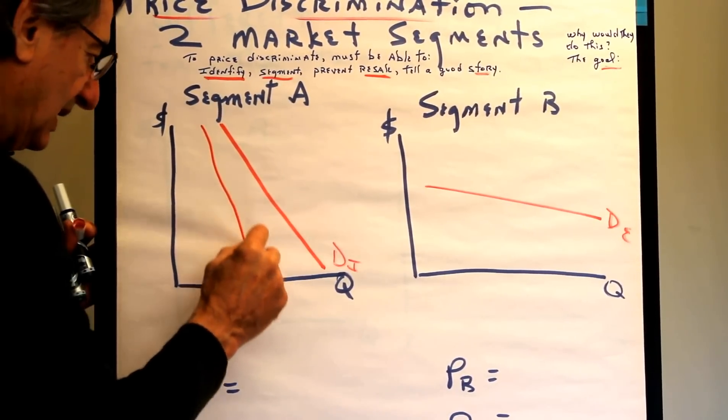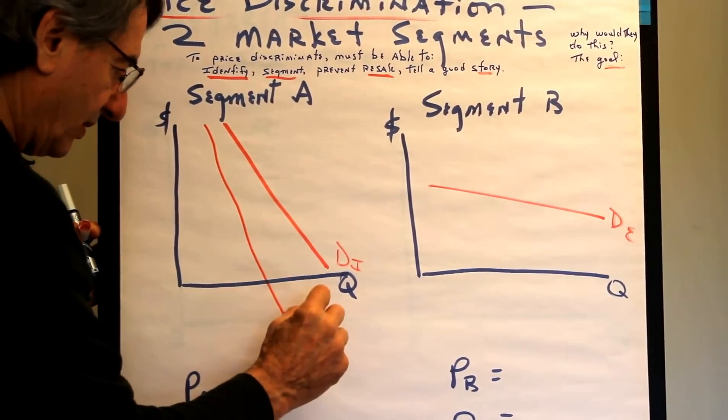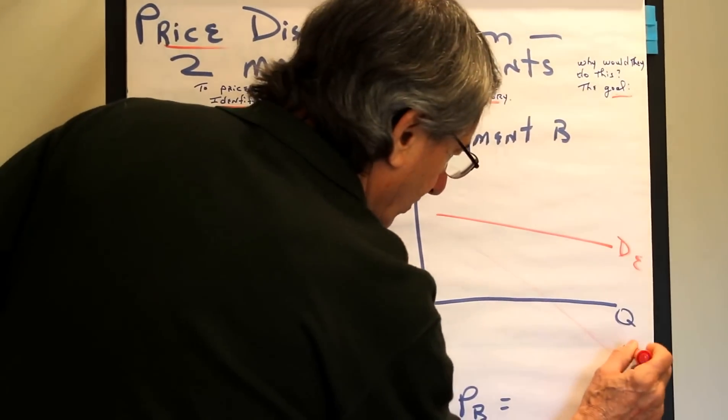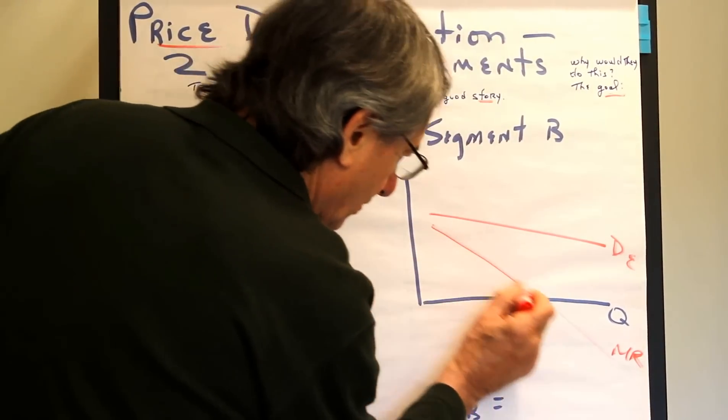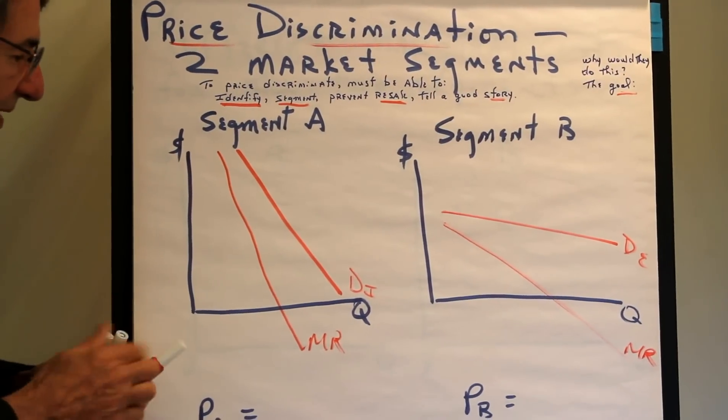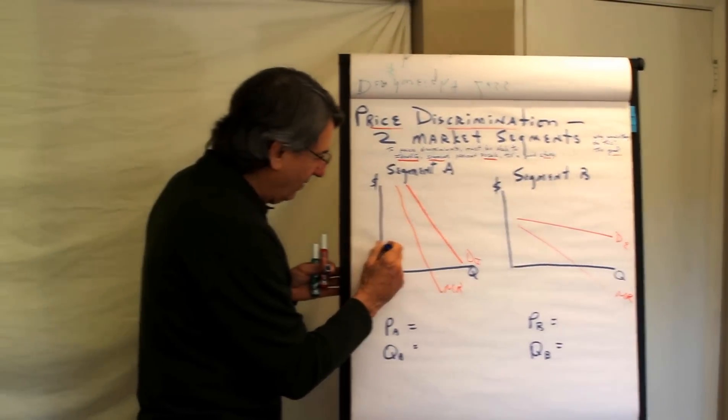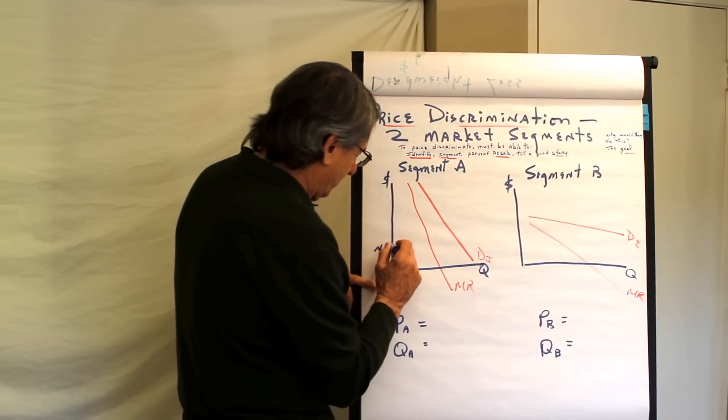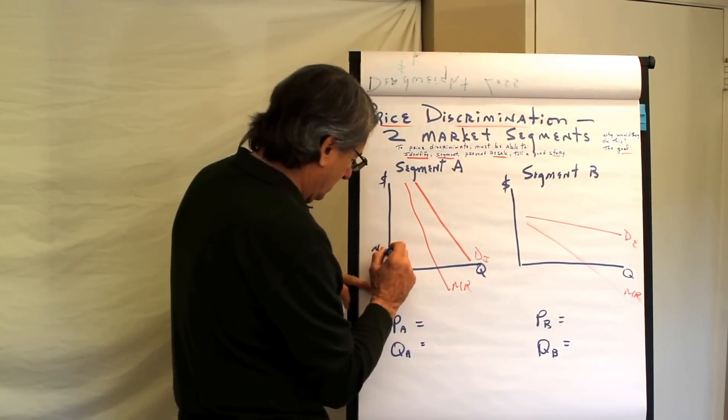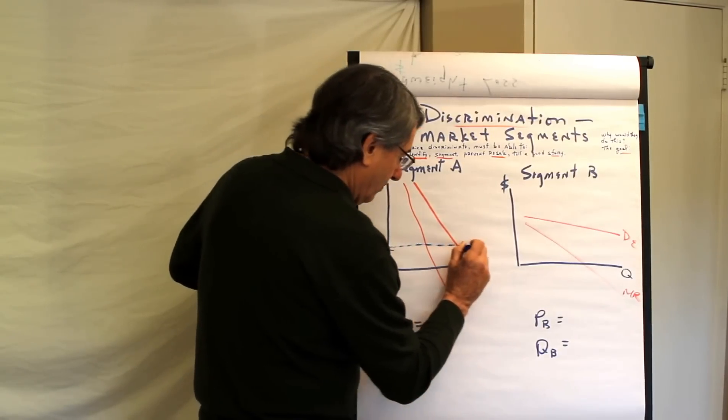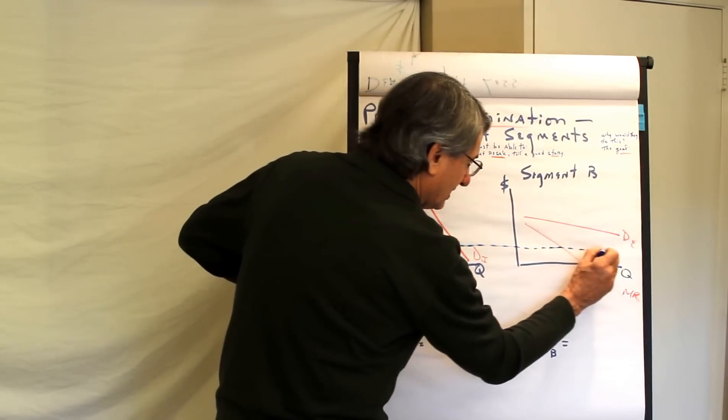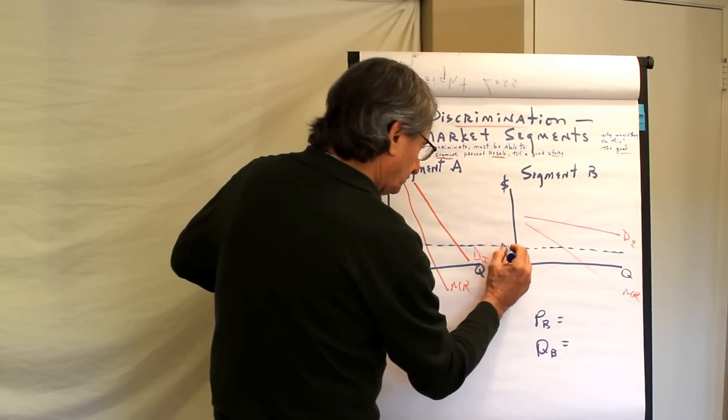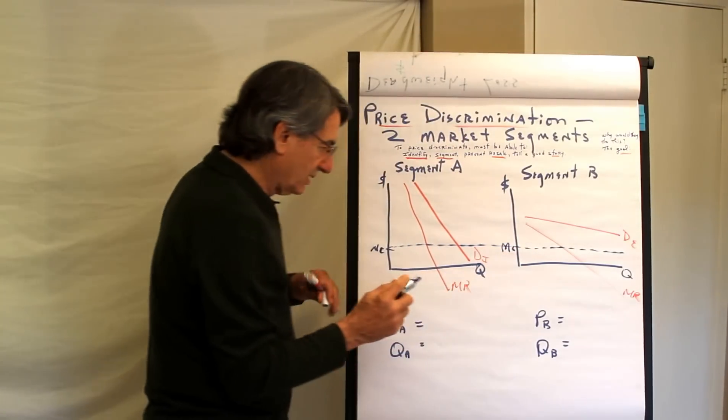then what we need is each group's marginal revenue curve. Because they are going to charge this group one price, and they are going to charge that group one price. So, those are the marginal revenue curves. And then let's say that when they fly, the marginal cost for both business people and vacationers is the same. They are both eating the same rotten food and with their chins on their knees.